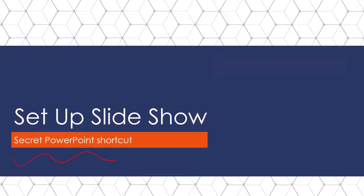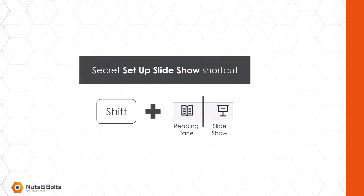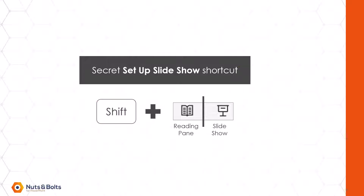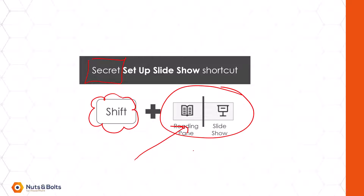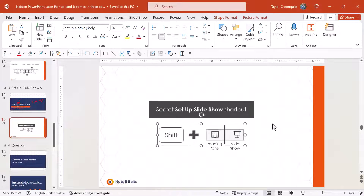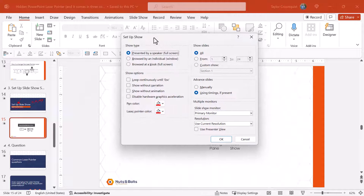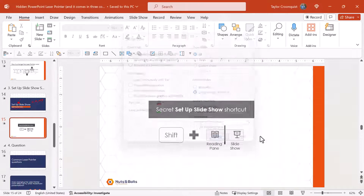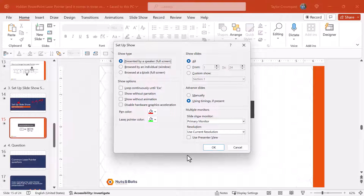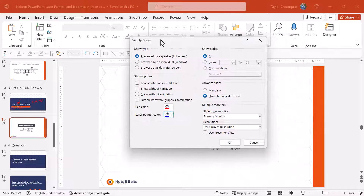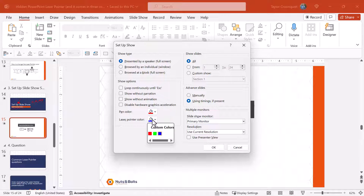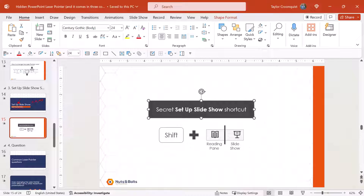Now let's look at the secret PowerPoint shortcut for quickly accessing the Setup Slideshow dialog box, which is useful if you need to do this frequently. The secret shortcut is holding the Shift key on your keyboard and either clicking the Reading Pane icon or the Slideshow icon at the bottom of your PowerPoint workspace. Very few people would think of holding Shift and clicking one of these icons. Holding Shift and clicking the Reading Pane icon pops open the Setup Slideshow dialog box, letting you quickly change your laser pointer color. This is a super fast way to quickly change your laser pointer color.